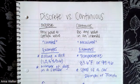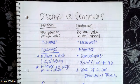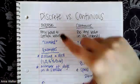Okay, so let's talk about the two different kinds of data. We have data that is known as discrete data, and then we also have data that's known as continuous data. I'm going to talk through each one individually.